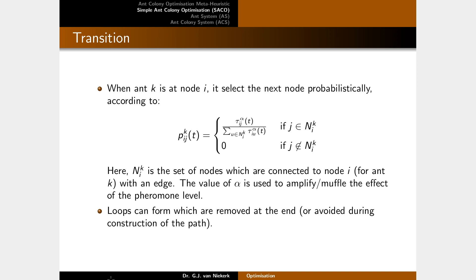Let's look at the transition rule for the SACO algorithm. Say ant k is at node i and needs to select an edge to travel to the next node. This is done by calculating a probability for each edge connected to node i. The probability of moving from node i to node j for ant k — the reason there's a different probability per ant is that ants calculate taboo lists so they don't travel the same edge if they visit that node again. N_ik is simply the set of all nodes connected to node i for ant k. If a node is not in that set, the probability to go there is zero.